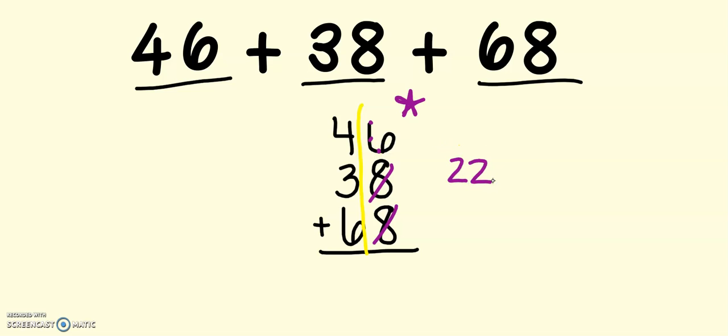Uh-oh. Wait a minute. I was just about to ask myself if I made a new 10. And look at what I'm noticing. In the ones place, I don't just have 1 new 10. I have 2 tens because I have 22. And since I have 2 tens, I'm not going to write a 1 up top. I need to write a 2 for my 2 tens.